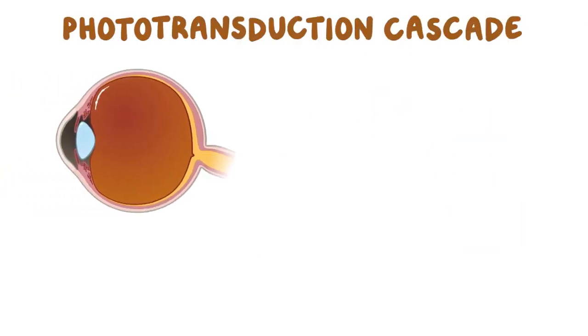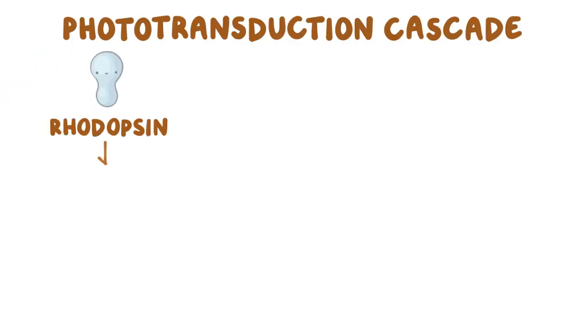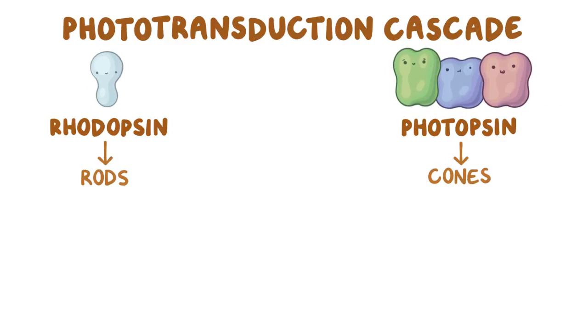Now let's go through the phototransduction cascade. When light enters the eye, it travels past the ganglionic cell layer and the interneuron layers until it reaches the photoreceptor layer and the pigmented layer deep in the retina. In the photoreceptors, light is absorbed by rhodopsin proteins in rods and photopsin proteins in cones.